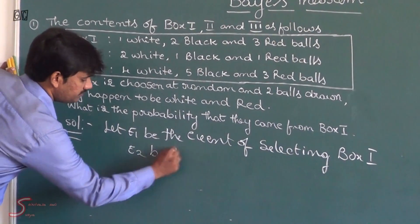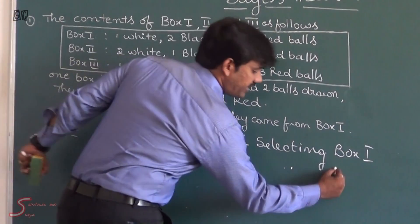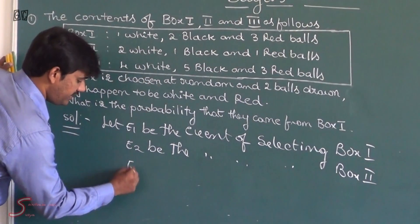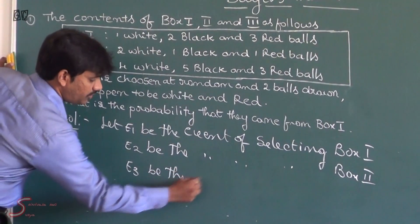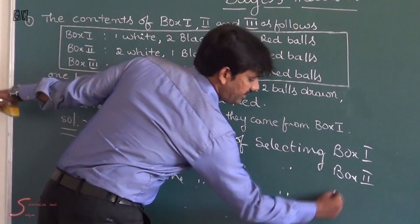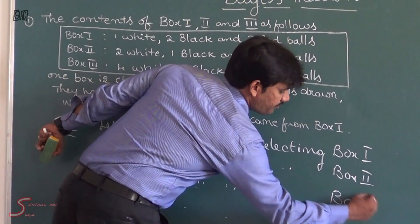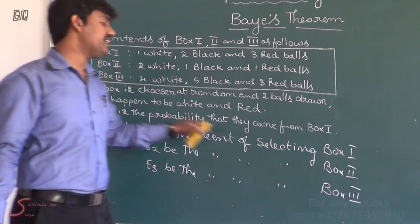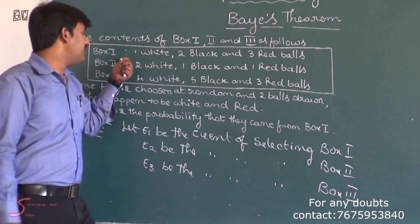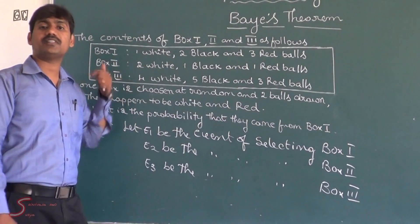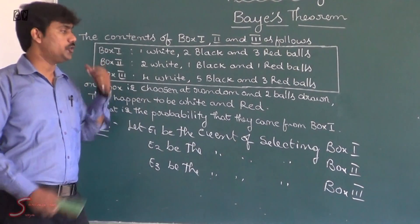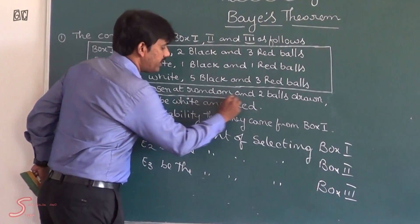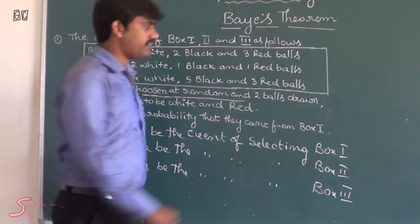Let E2 be the event of selecting box 2, and E3 be the event of selecting box 3. So E1 is the event of selecting box 1, E2 is the event of selecting box 2, and E3 is the event of selecting box 3. First we have to select a box out of the three boxes.